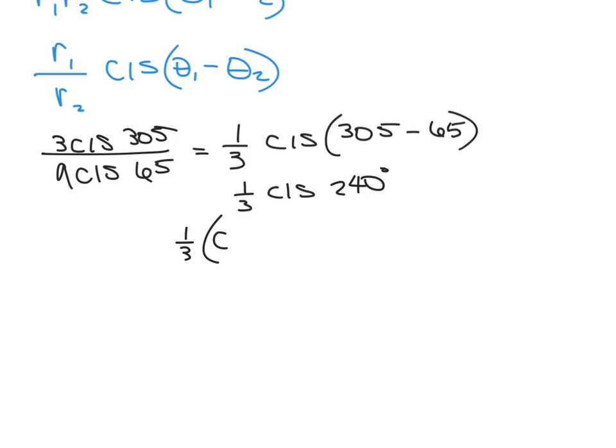So 1 third, and we're going to write this as cosine of 240 plus i sine of 240. Then we take the cosine of 240, which is in the third quadrant - all students take - so it's going to be negative in that quadrant. And sine is also going to be negative.